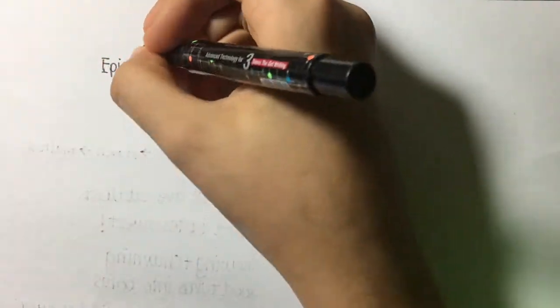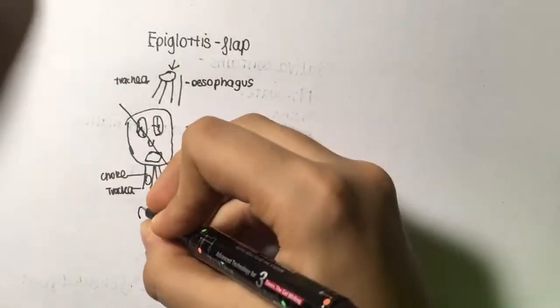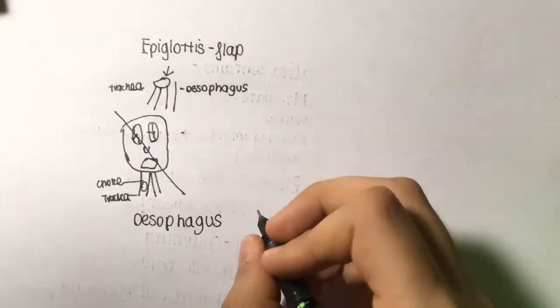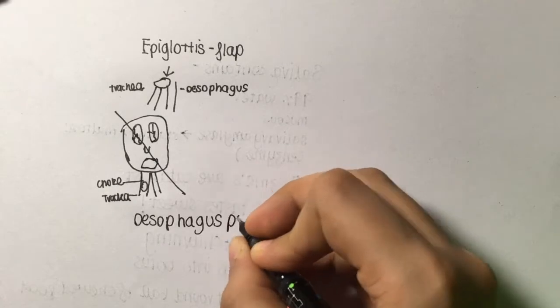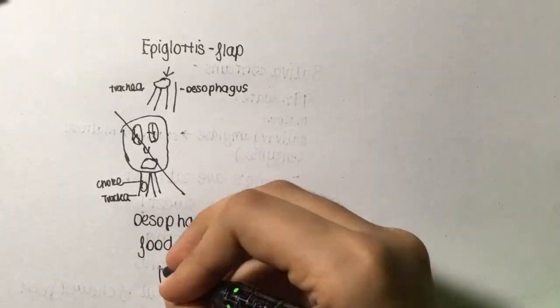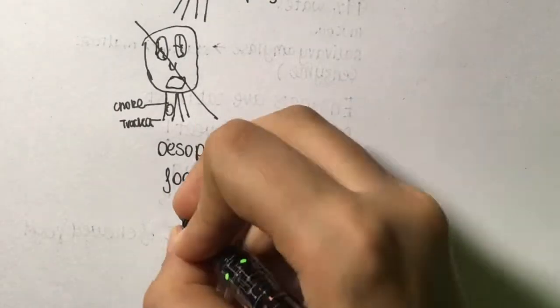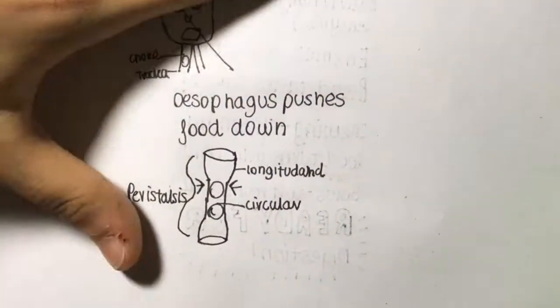The epiglottis is a flap which separates your windpipe from your esophagus so you don't choke. The esophagus has two main muscles: the circular and longitudinal muscles, which push down the food to the stomach. This iconic wave-like motion from the esophagus is known as peristalsis.